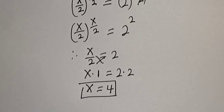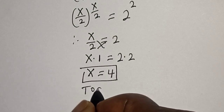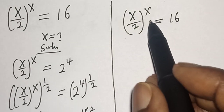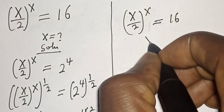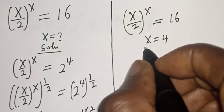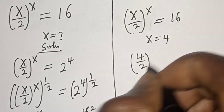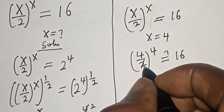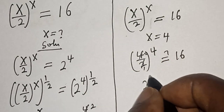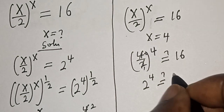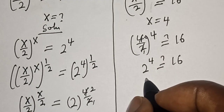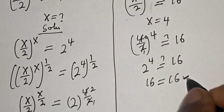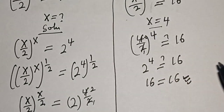To check, we substitute into the given equation: s over 2 to the power of s must equal 16 at s equals 4. So 4 over 2 to the power of 4 must equal 16. That gives us 2 to the power of 4, which must equal 16. And 2 to the power of 4 is indeed 16, which satisfies the given equation at s equal to 4.